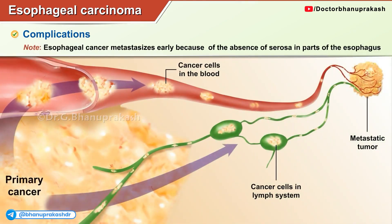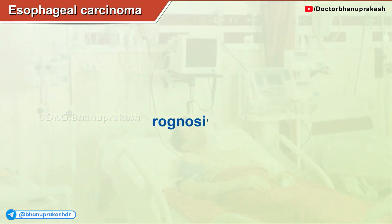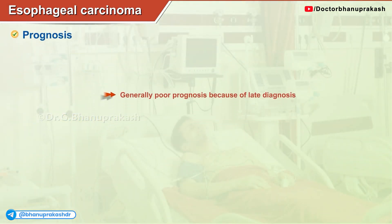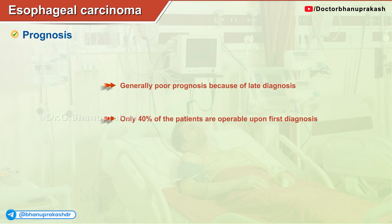Note that esophageal cancer metastasizes early because of the absence of a serosa in parts of the esophagus. Prognosis is generally poor because of late diagnosis, and only 40% of patients are operable upon first diagnosis. The more distal the tumor, the better the prognosis.